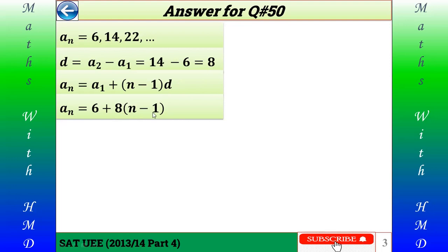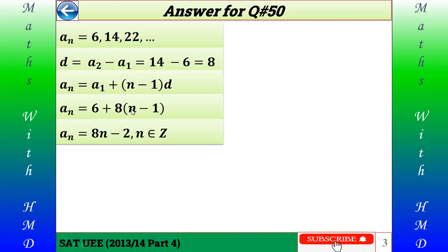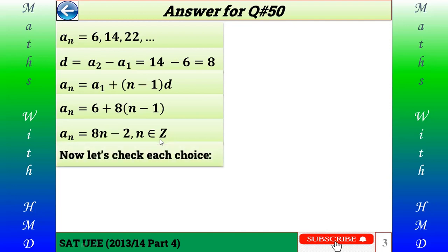So aₙ equals 6 plus 8 times (n minus 1), which implies aₙ equals 8n minus 8 plus 6, so aₙ equals 8n minus 2, for n an element of the integers. If n is not an integer, then it is invalid. Let's now check each choice whether the numbers described can be a term of the sequence.